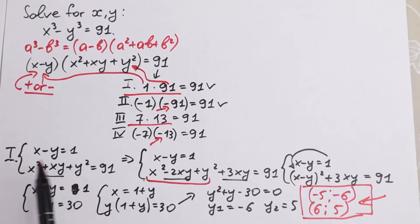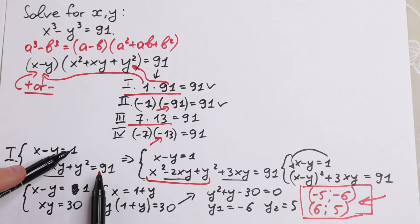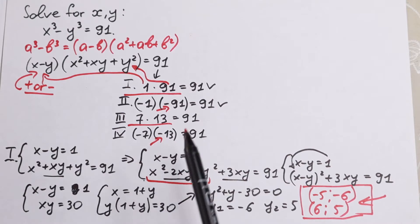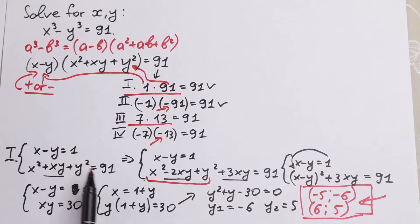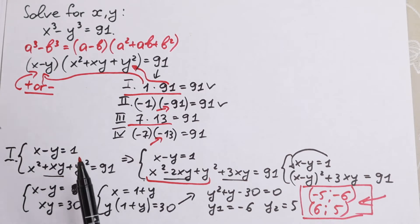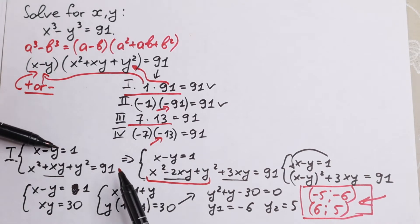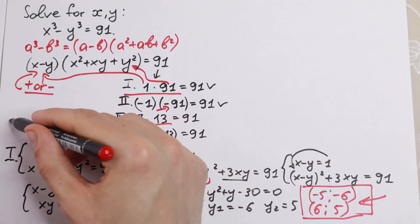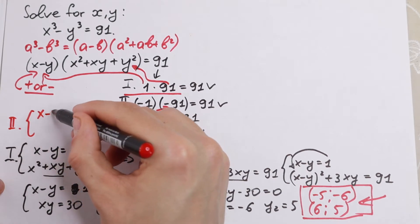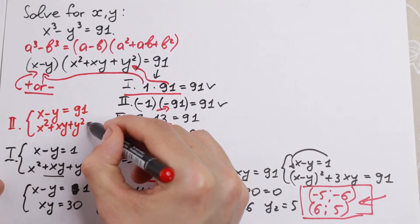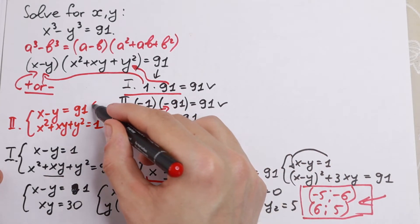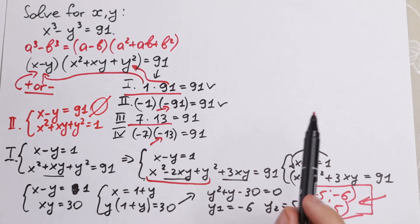The second case swaps the factors: x minus y equals 91 and x squared plus xy plus y squared equals 1. This case has no solution, since the second parenthesis cannot equal 1 under these constraints.